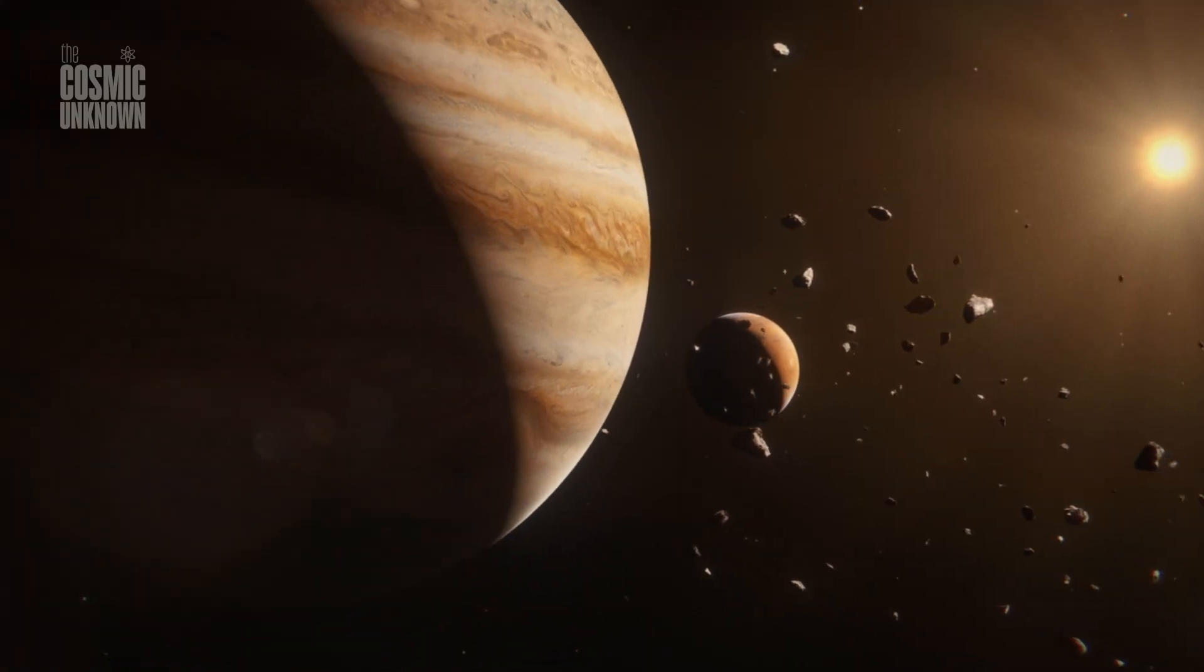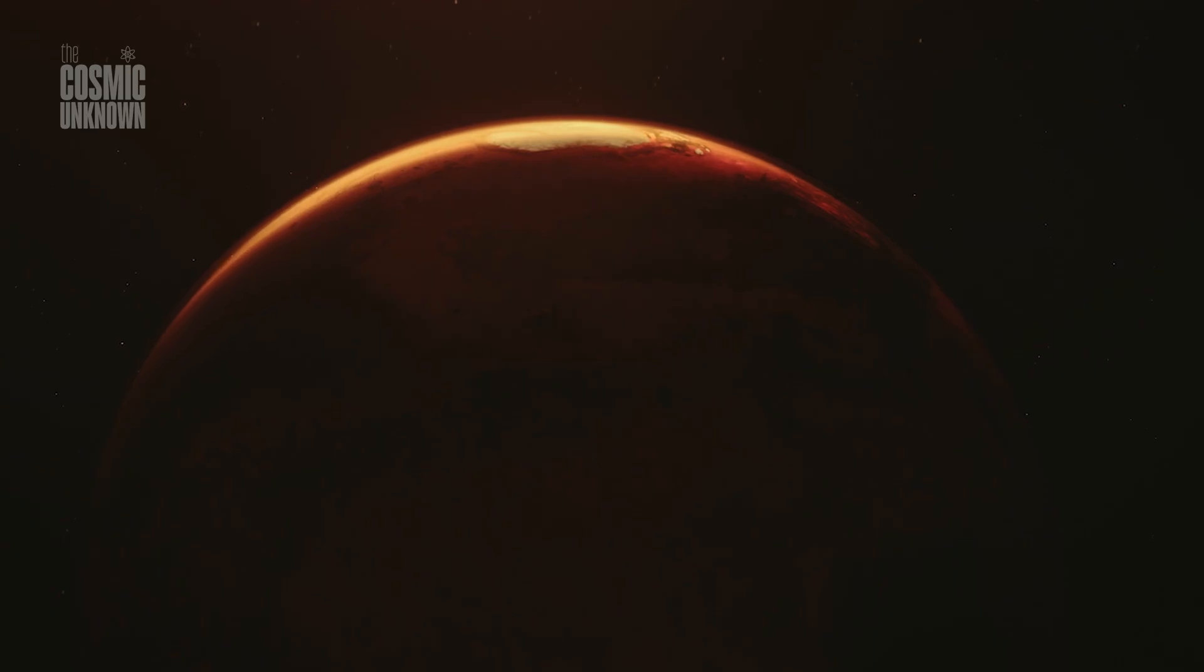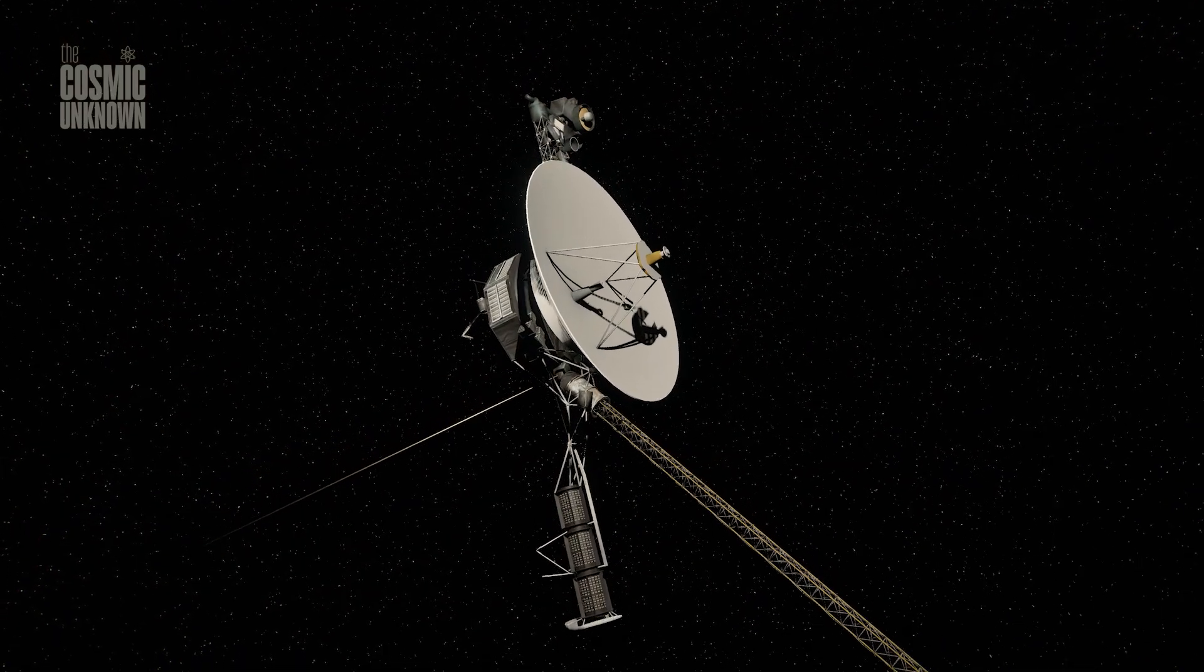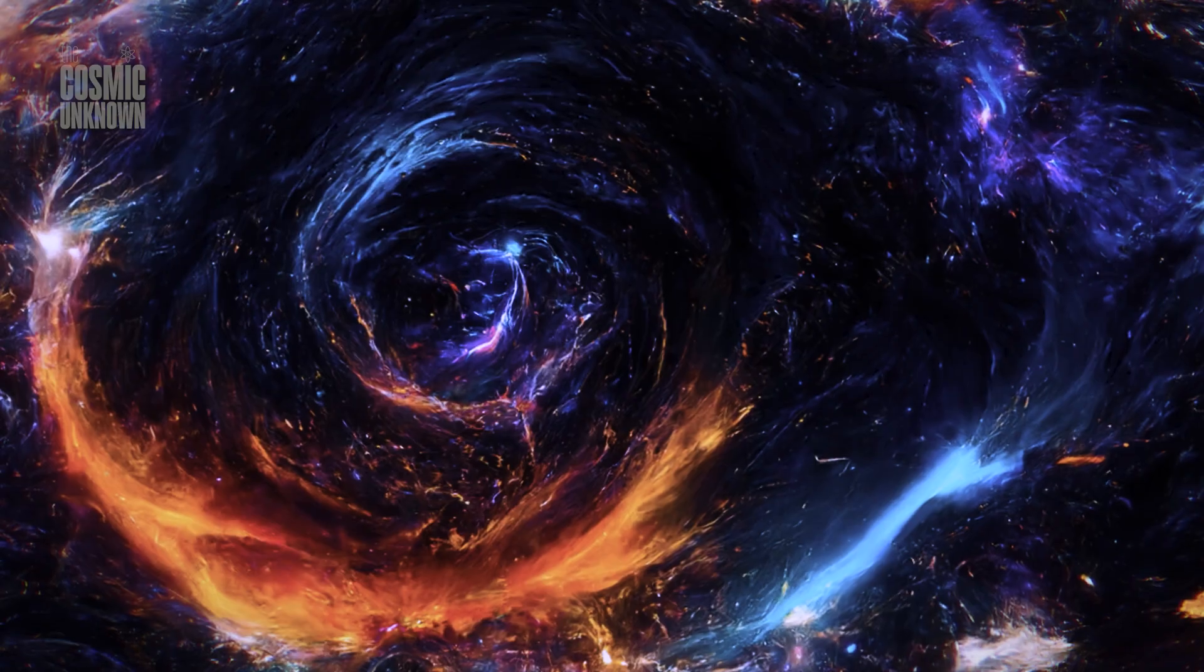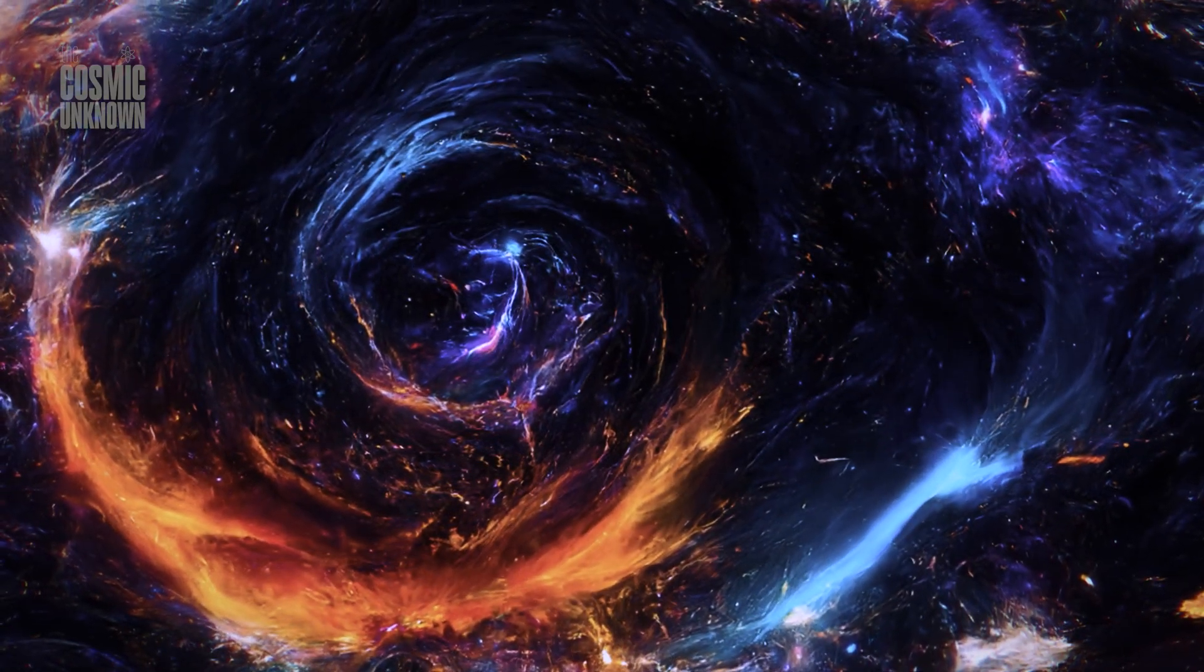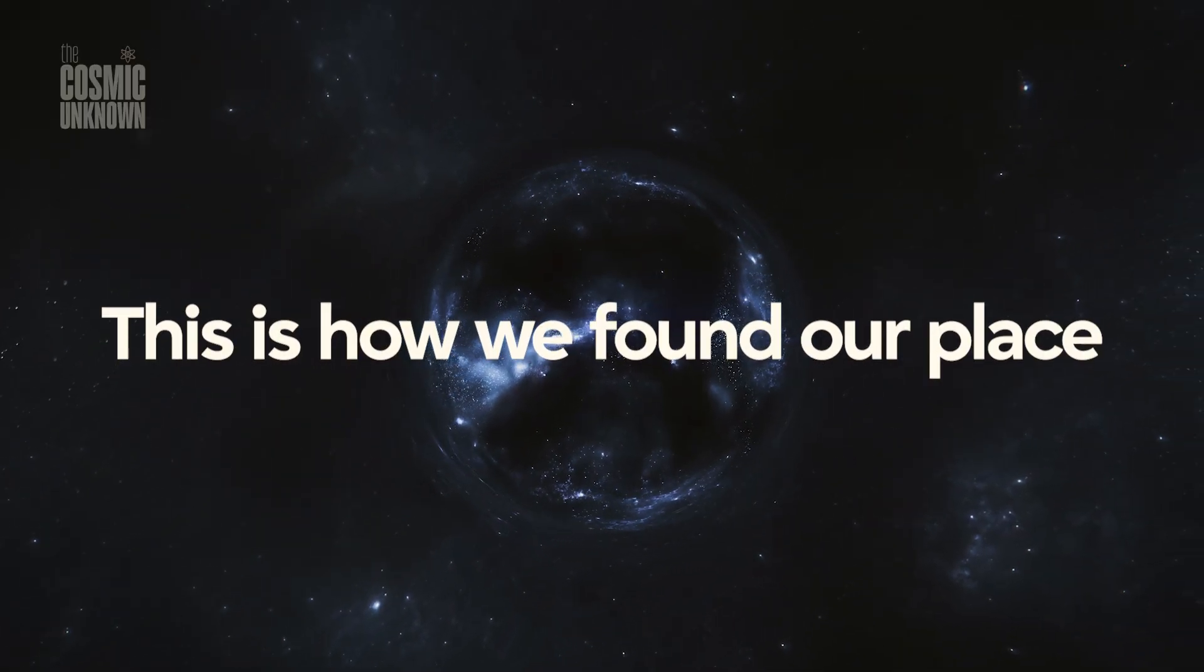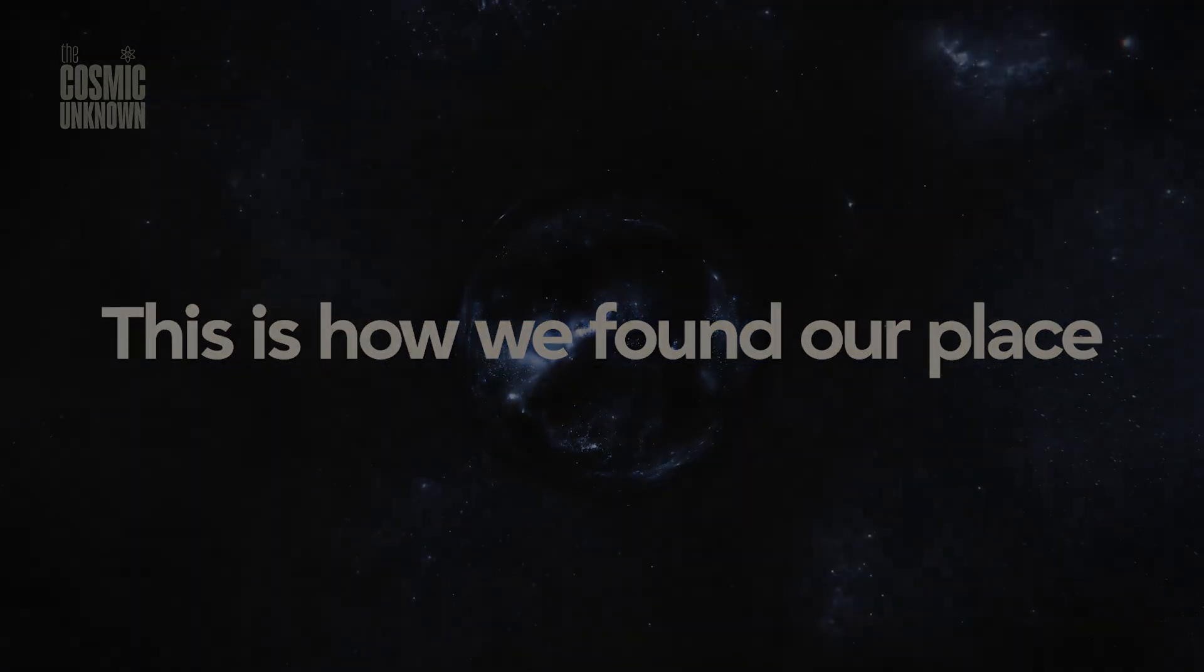They figured out where our solar system sits inside the Milky Way, without ever stepping outside it. This isn't a story of direct observation. It's a story of inference, of building cosmic rulers, of decoding star clusters, pulses of light, and radio waves that pass through darkness. Bit by bit, we stopped assuming and started measuring. This is how we found our place. Not by seeing the galaxy, but by learning to read the shadows within it.